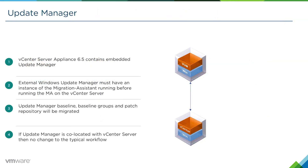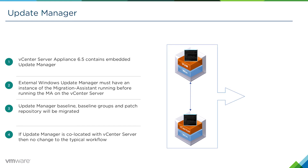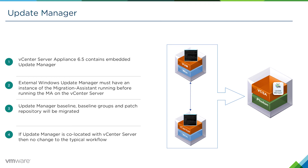In vCenter Server Appliance 6.5, Update Manager is now an embedded service. If you're running a vCenter Server on Windows with an external Update Manager — meaning it exists on its own separate virtual machine — we need to run an instance of the migration assistant on the Update Manager machine first, before running the instance on the vCenter Server machine. The Update Manager baseline, baseline groups, and patch repository will be migrated. If Update Manager is co-located with the vCenter Server on the same machine, we don't have to do anything special — the two will be combined into a single vCenter Server Appliance with Update Manager embedded on the vCSA 6.5.